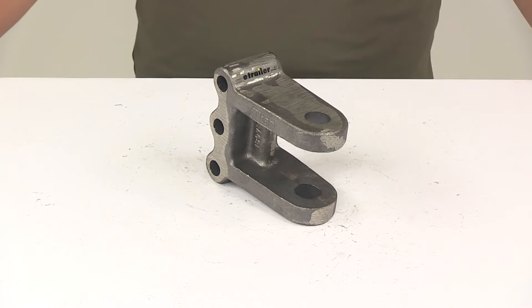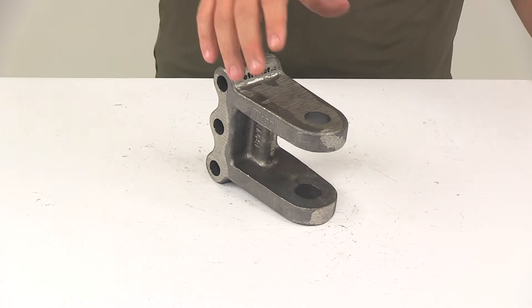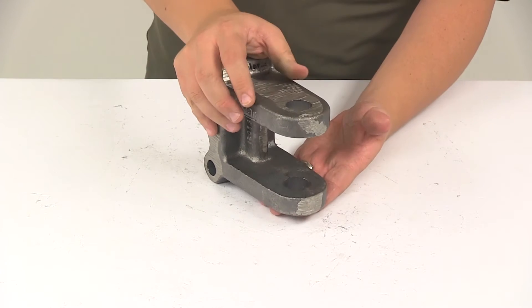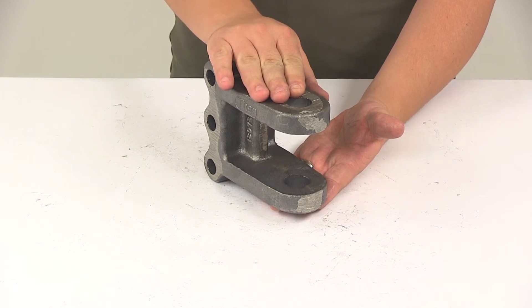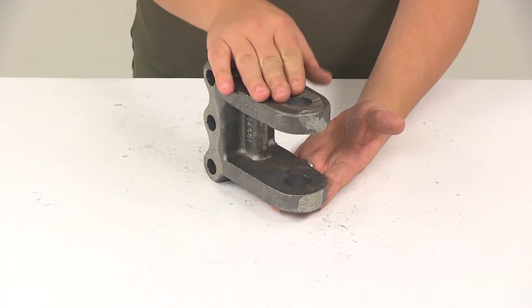Today we're going to be taking a look at the Titan Tutank Clevis Adjustable Channel Mount. This unit features a weight capacity of 20,000 pounds. The Tutank Clevis is designed to couple with a Lynette ring.